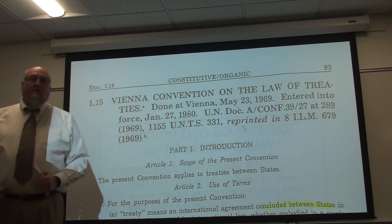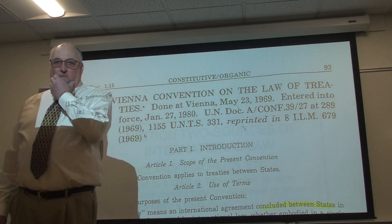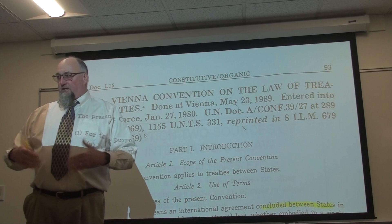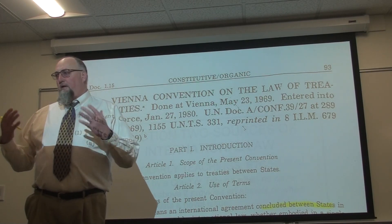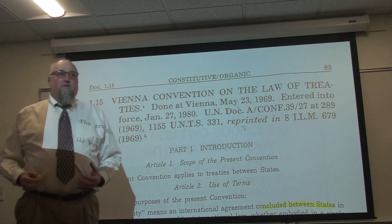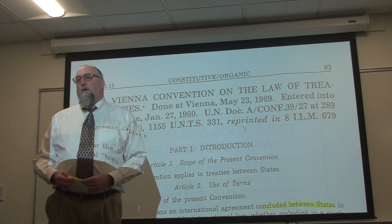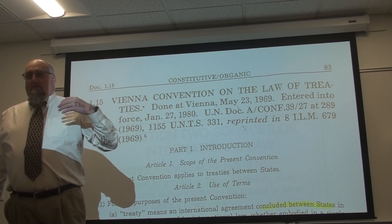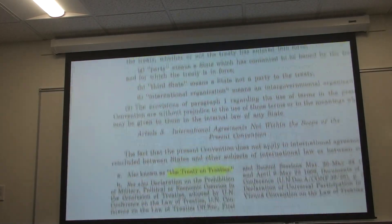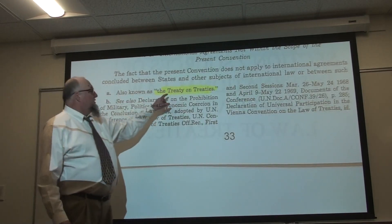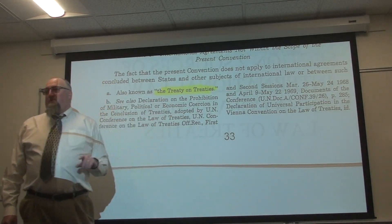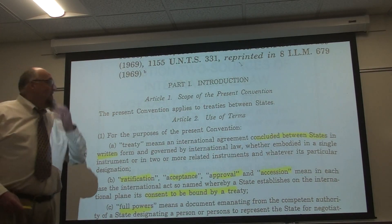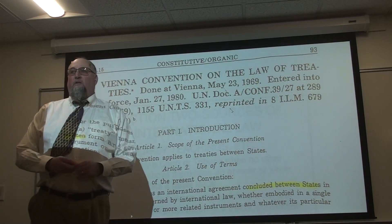The Vienna Convention is very important in international law. It is an embodiment of codification — that is, writing up customary rules of international law into a written document. Sometimes it's called a 'treaty on treaties,' which is an agreement about agreements.